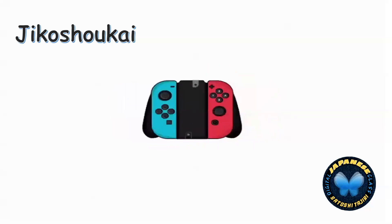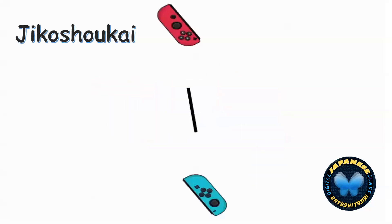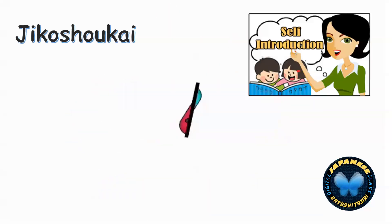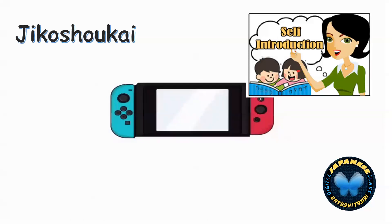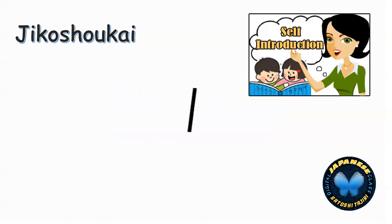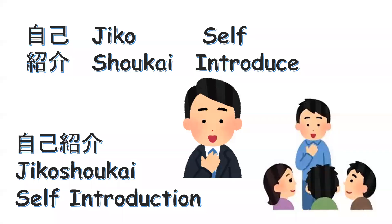Jiko shokai — what does jiko shokai mean? Jiko shokai means self-introduction. It comes from the word jiko, which means self, and shokai, which means to introduce. Once we combine the two, it becomes jiko shokai, meaning self-introduction. Let's have a format for how we can start introducing ourselves.